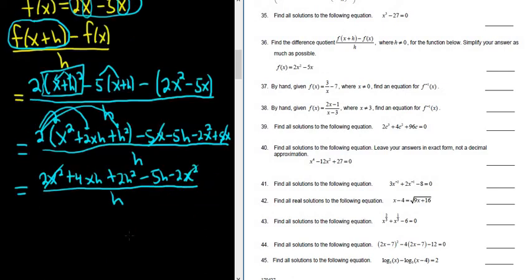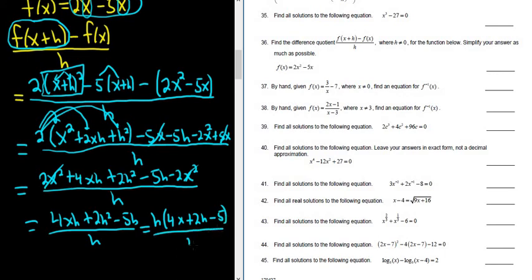So now we're at the point where we have, it looks like, 4xh plus 2h squared minus 5h all over h. At this point, we can pull out an h. So h parentheses, and then we have 4x, looks like plus 2h, and then minus 5. That's all being divided by h. So finally, we get 4x plus 2h minus 5. And that is the final answer.